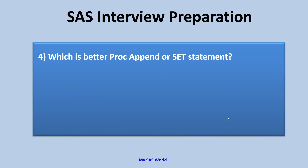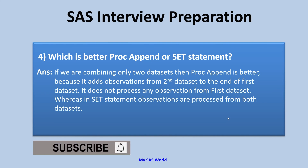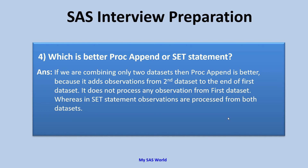Which is better: proc append or set statement? If we are combining only two datasets, then proc append is better. It adds observations from the second dataset to the end of the first dataset without processing any observations from the first dataset, whereas the set statement processes observations from both datasets. This makes proc append faster and more efficient. However, the limitation is it can only work on two datasets. Also, if the number of variables differs between datasets, it will not process — you need to use the force option in that case.